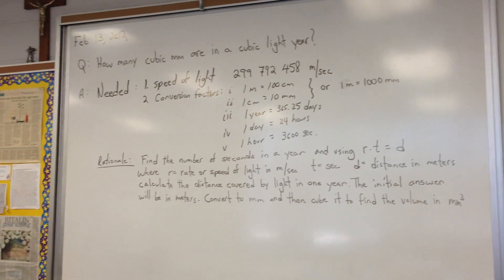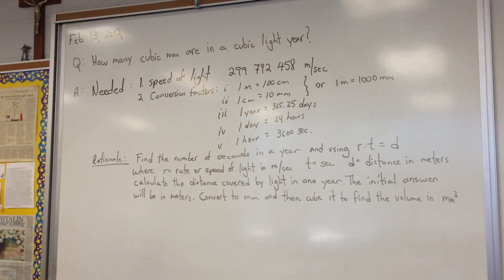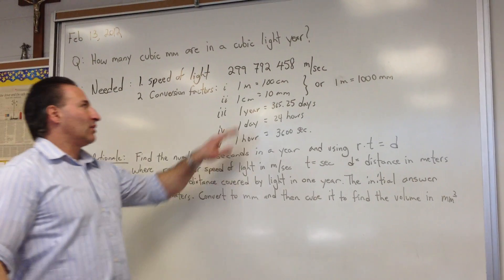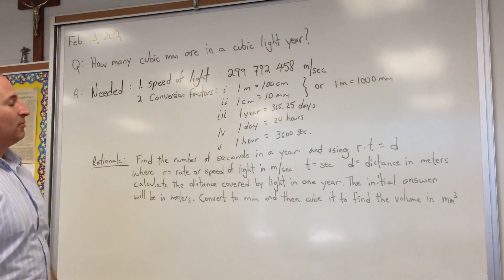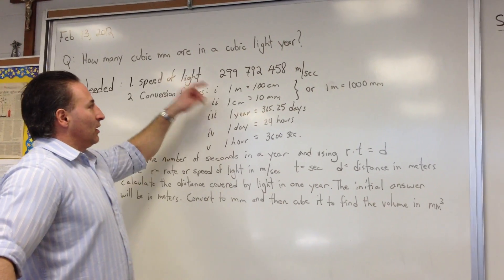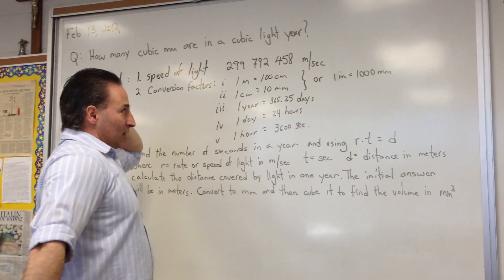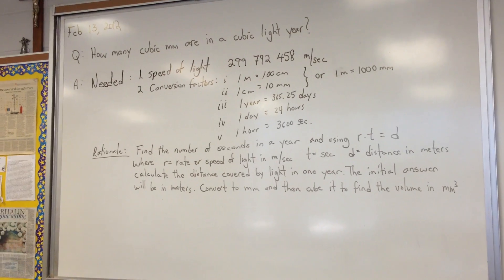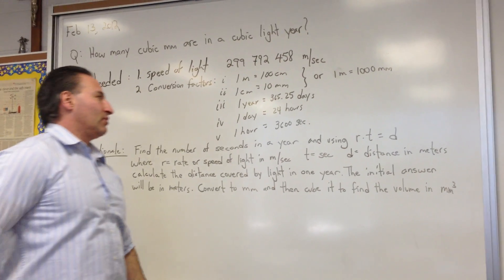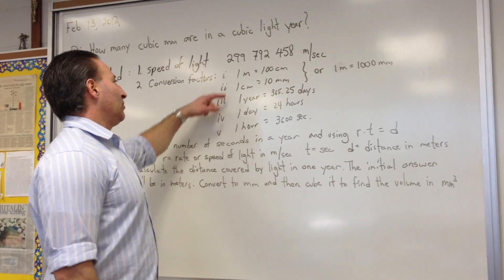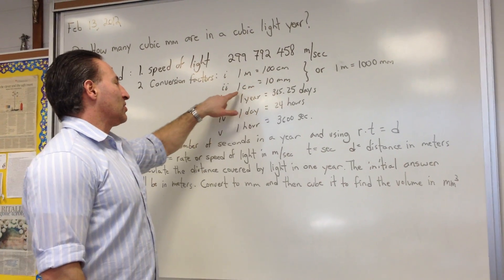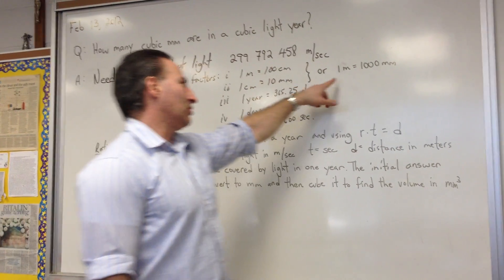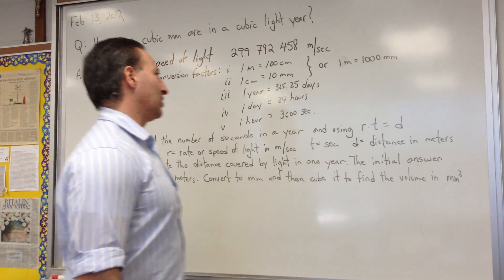First thing we need is the speed of light, which I found in my calculator. It's embedded in the memory. It's 299,792,458 meters per second. Then we use a couple of conversion factors. We could have used 1 meter equals 100 centimeters and 1 centimeter equals 10 millimeters. I combine the two and we use 1 meter equals 1,000 millimeters.